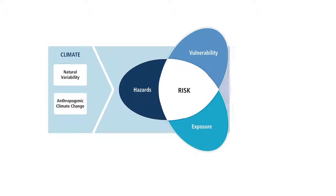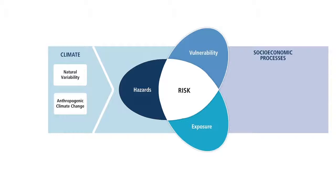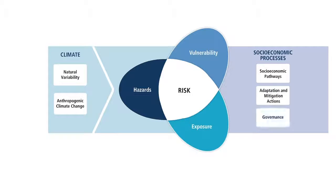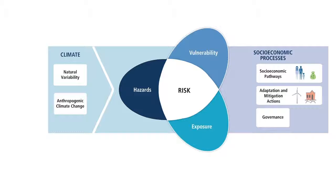People are important in determining the risks of climate change, because society and its pathways also influence risk. These socio-economic processes include changes in people's livelihoods, economies, and well-being over time, actions to reduce the amount of climate change that occurs and to prepare for impacts that can't be avoided, and the policies and operations of governments.